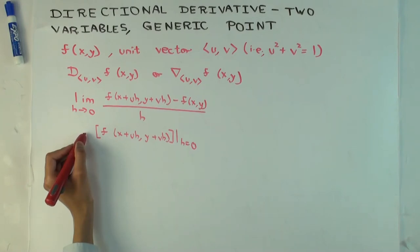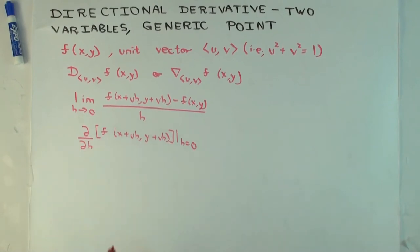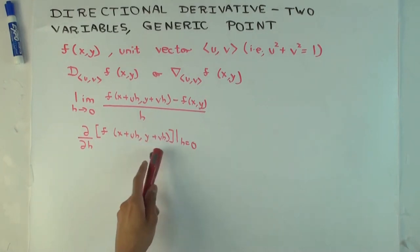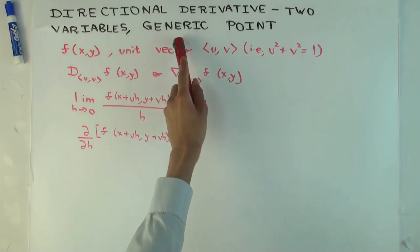But, just be careful, now it's a partial derivative with respect to h. Why? Why do we need to use partial derivative now? Because x and y are treated as variables. So x and y are now no longer constants.